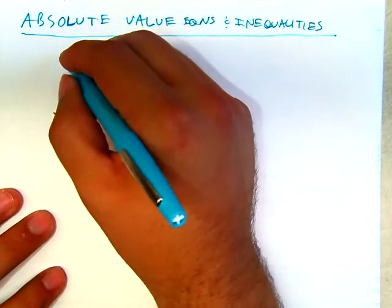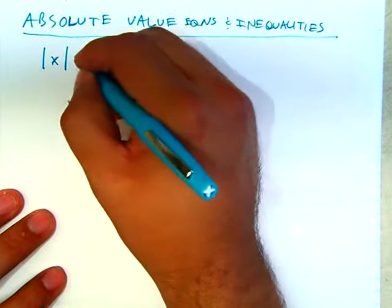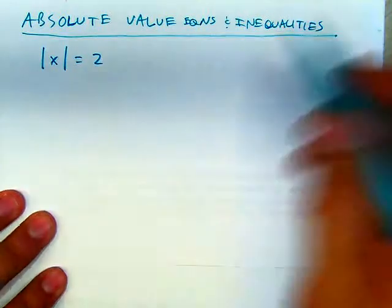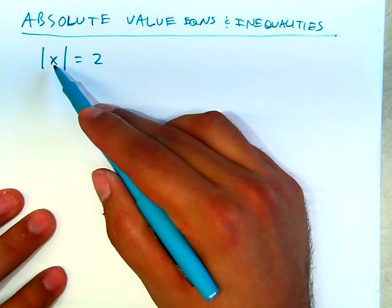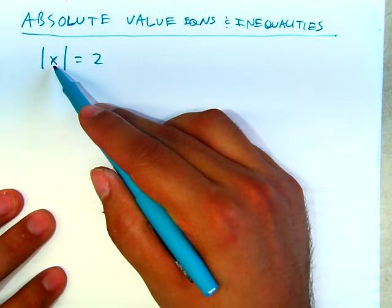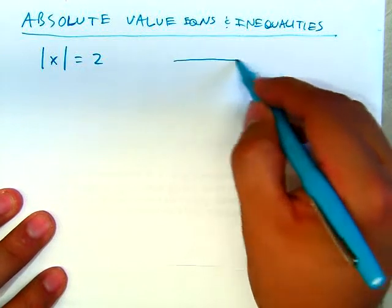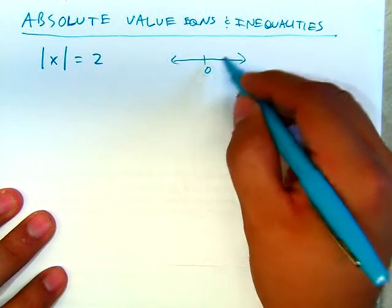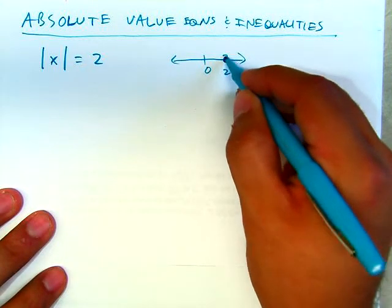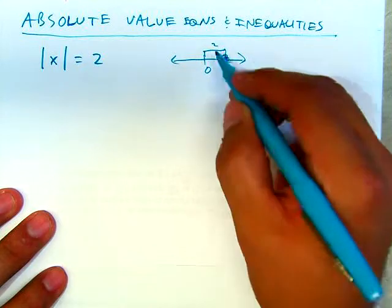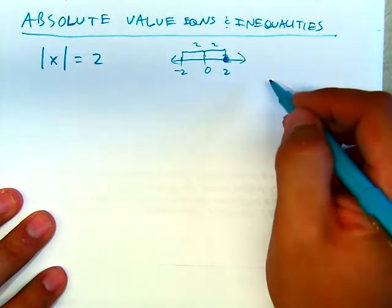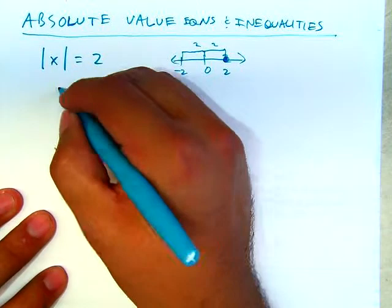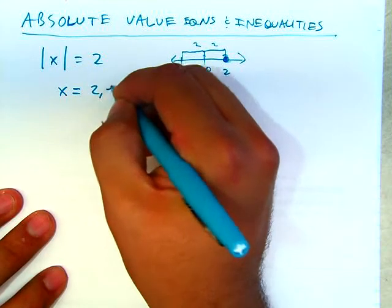We'll start with the basic example of an equation like absolute value of x equals 2. If you remember, this means we want a number or numbers whose distance to 0 on the number line is 2 units. 2 would be 2 units away and negative 2 would be 2 units away from 0, so x could be either 2 or negative 2.